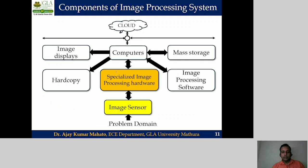The next component in the image processing system is specialized image processing hardware. In this hardware, we usually perform arithmetic and logical operations — arithmetic operations like addition, subtraction, multiplication, and division — in order to select our region of interest in the given digital input image.